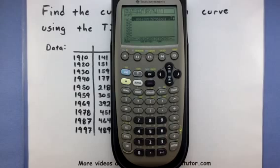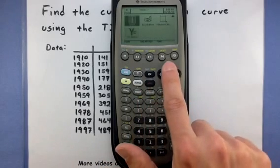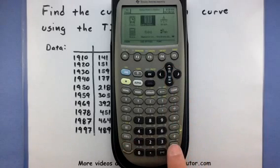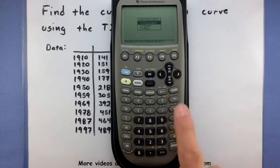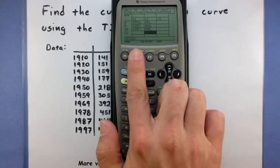Now one thing you might be interested in is how well does our data actually match up to this regression curve that we just formed? Well, let's go back into apps, find the data matrix editor, and now let's go to current. We might want to actually plot this data along with the curve. So I'm going to go to F2 where it says plot setup.